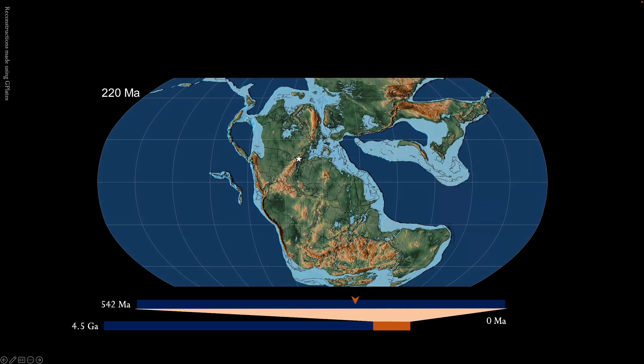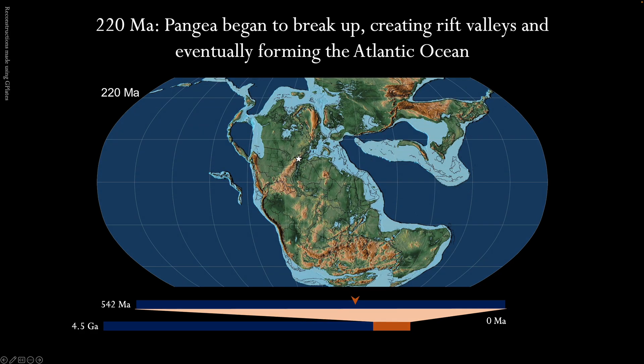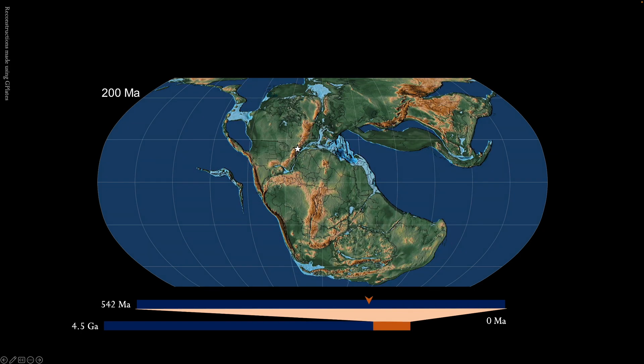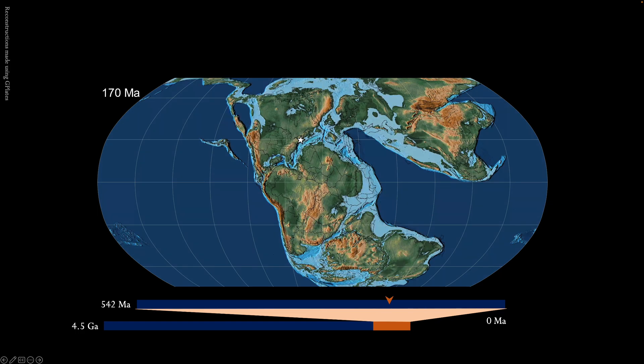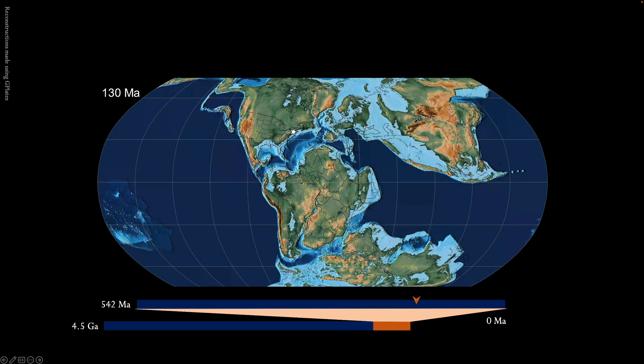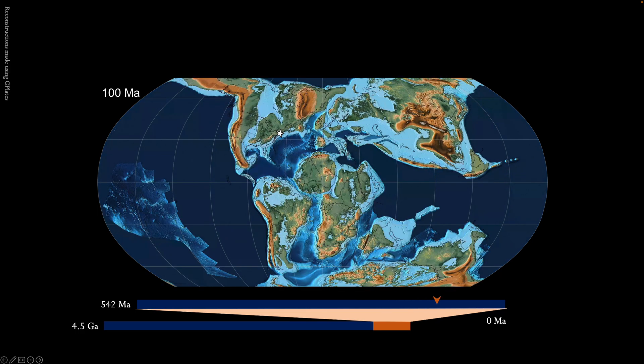The Appalachian Mountains maintained their Himalayan heights until 220 million years ago, when Pangaea began to break up. The continents split apart, creating rift valleys and eventually the Atlantic and Indian Oceans.